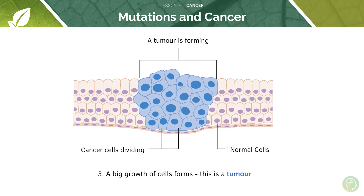These are multiple cells which have a mutation that clump together to form this growing mass. You can see here that the tumour is slightly more irregular than the normal cells surrounding it — the cells are not in a regular shape and are not neatly arranged in rows and columns. So this is your tumour: a big growth of cells.